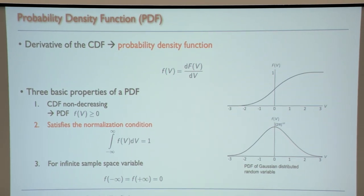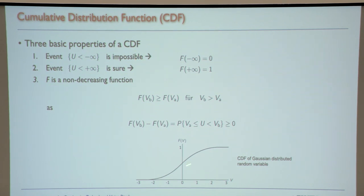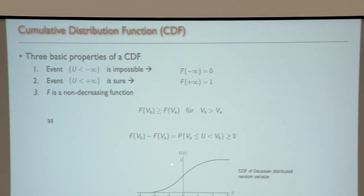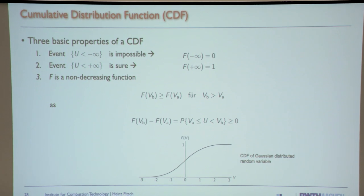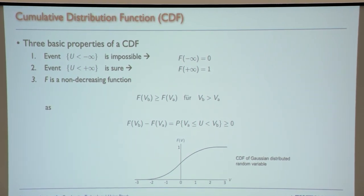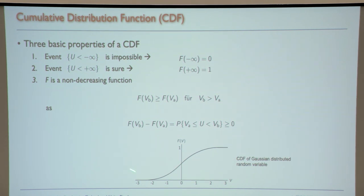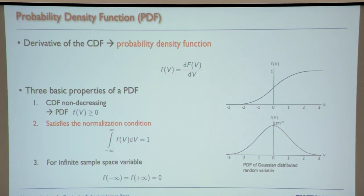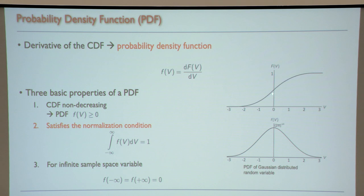From the CDF we define the probability density function (PDF) as its derivative with respect to the sample space variable: dF/dV. The PDF is a non-negative function because the CDF is non-decreasing. This is how a Gaussian (normal) PDF looks like.